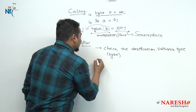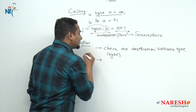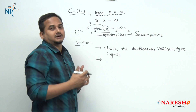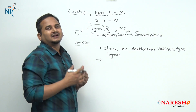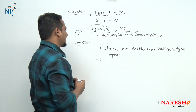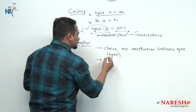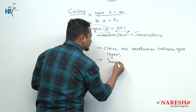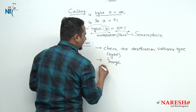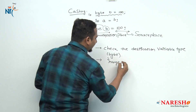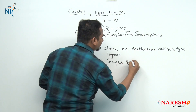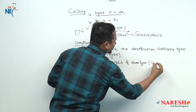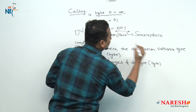After that, the compiler is going to check the range of the data type. What is the range of the data type? The compiler is going to check the range of the data type. Here the data type is byte.